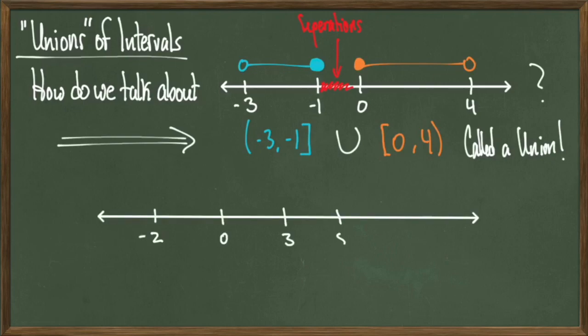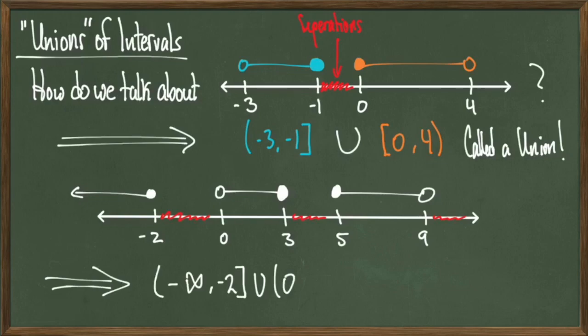As a quick example, given a number line with an arrow toward negative infinity and two segments with numeric endpoints, we identify each piece: the leftmost segment is (-∞, -2], the middle segment is (0, 3], and the right segment is [5, 9). Write them all out with union signs in between, and you're done.